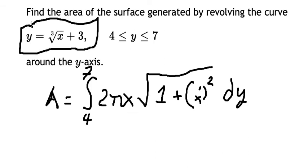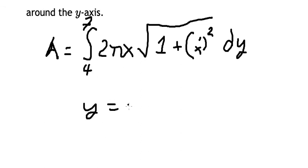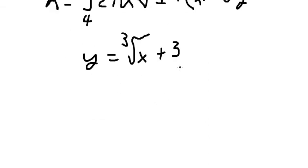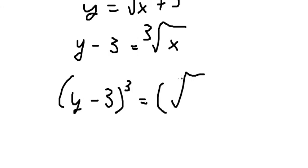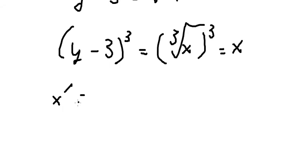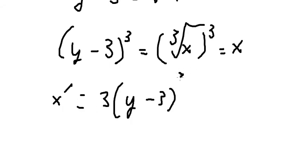We have the function here. We put number 3 to the left side, then we raise both sides to the power of 3. Now we have s. We take the first derivative of s, so we get 3 times (y minus 3) to the power of 3 minus 1, which gives us 3(y minus 3) squared.